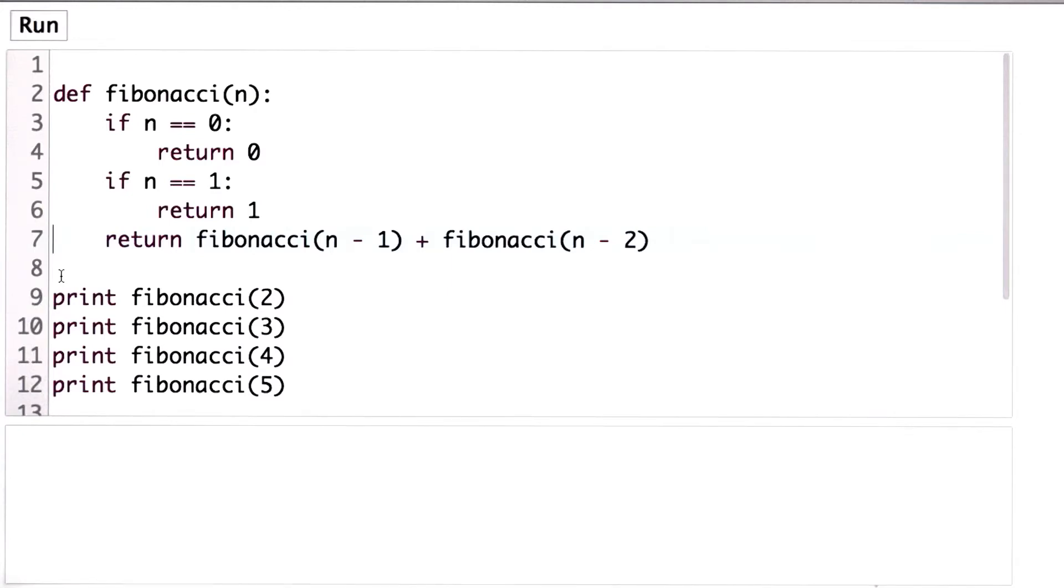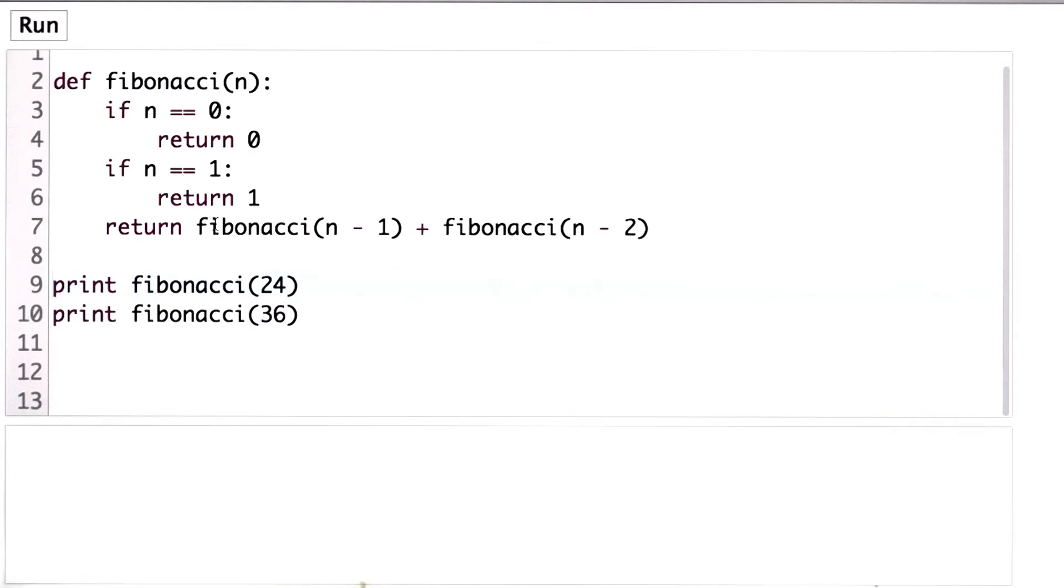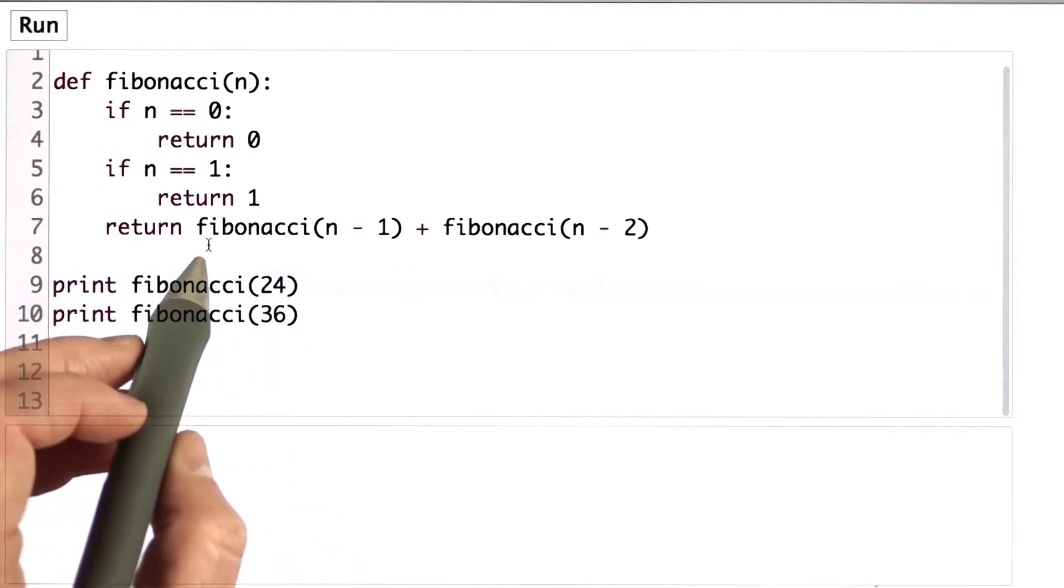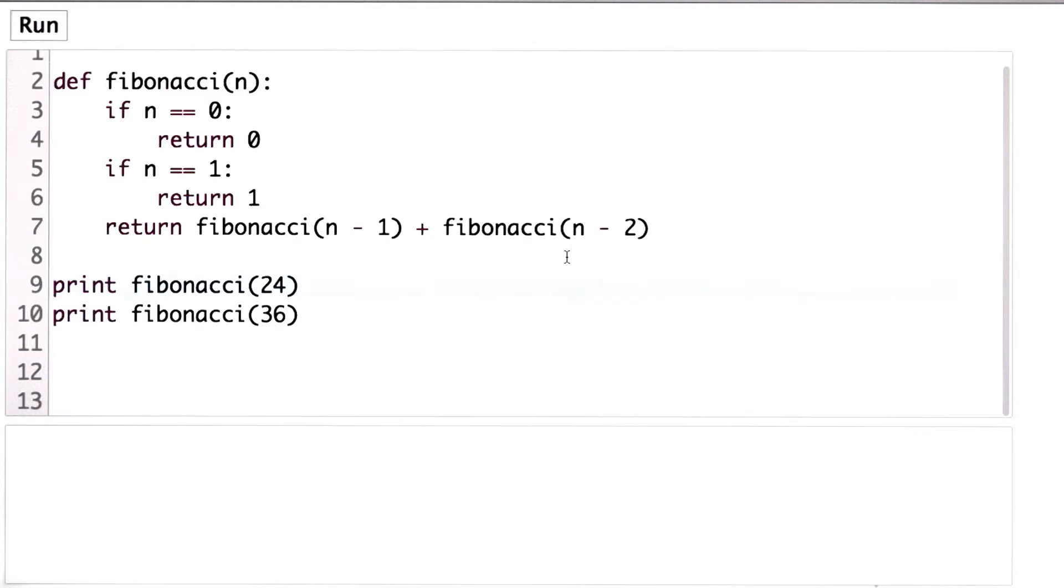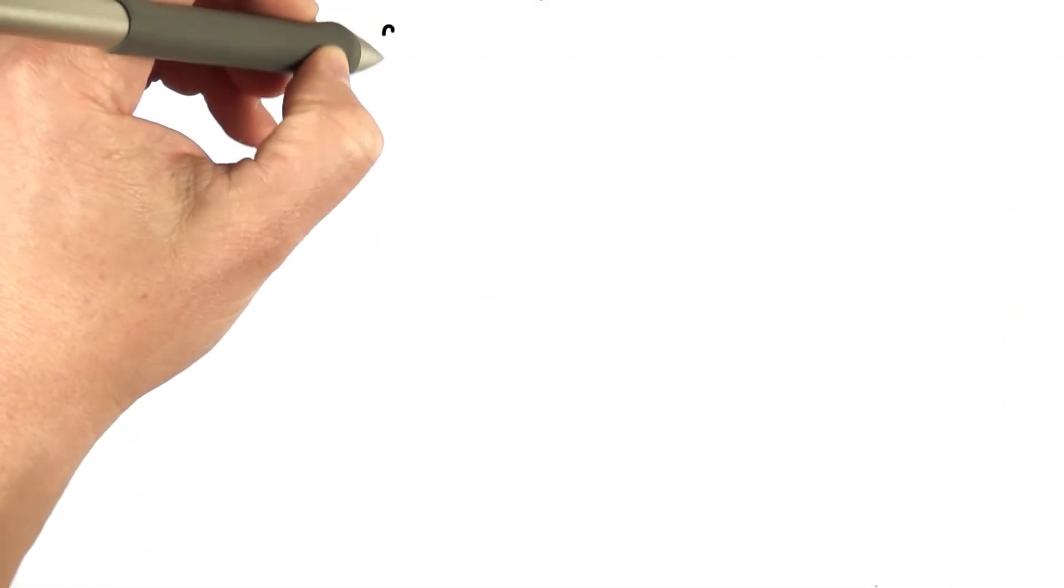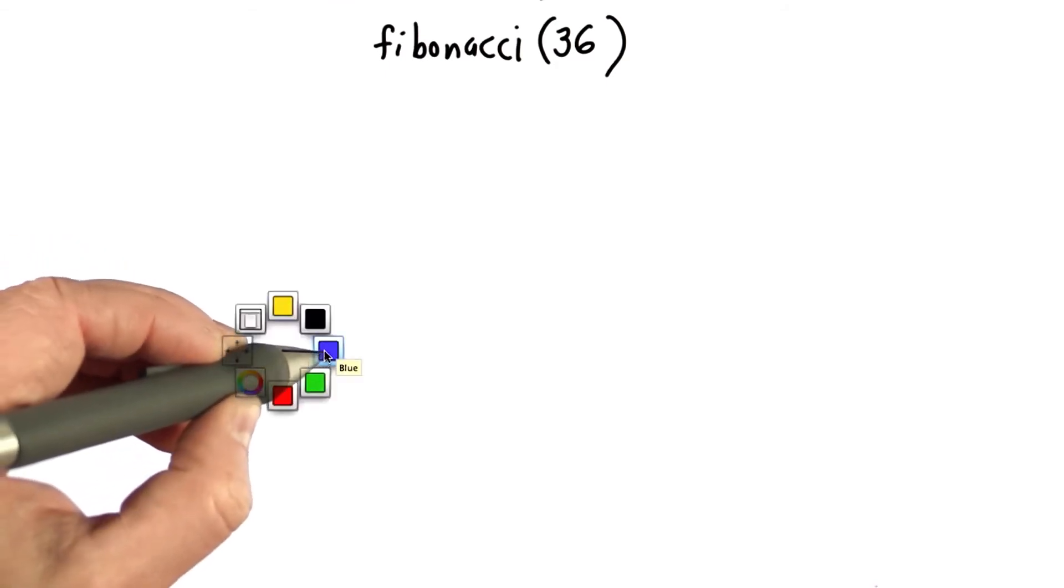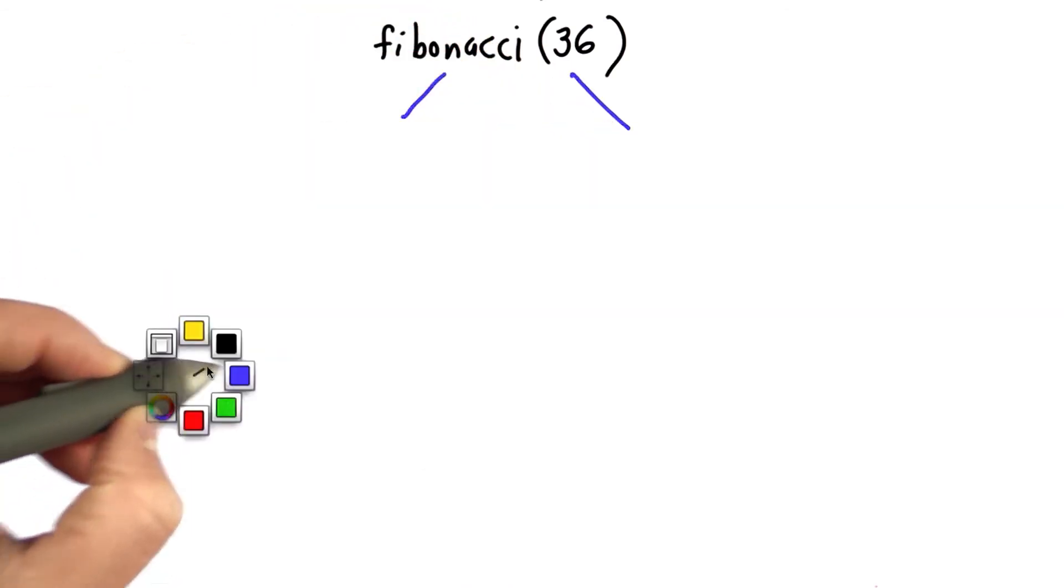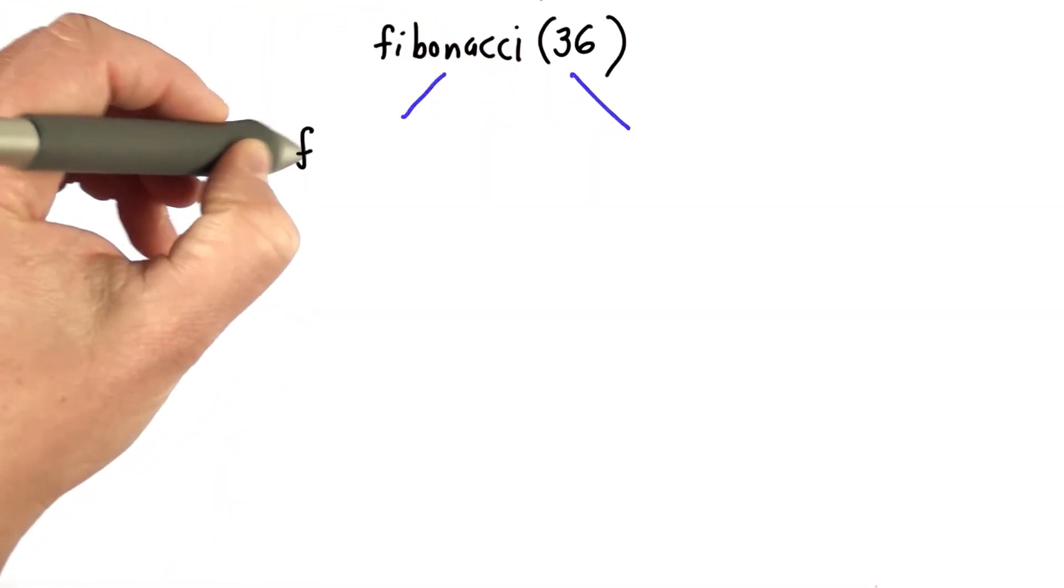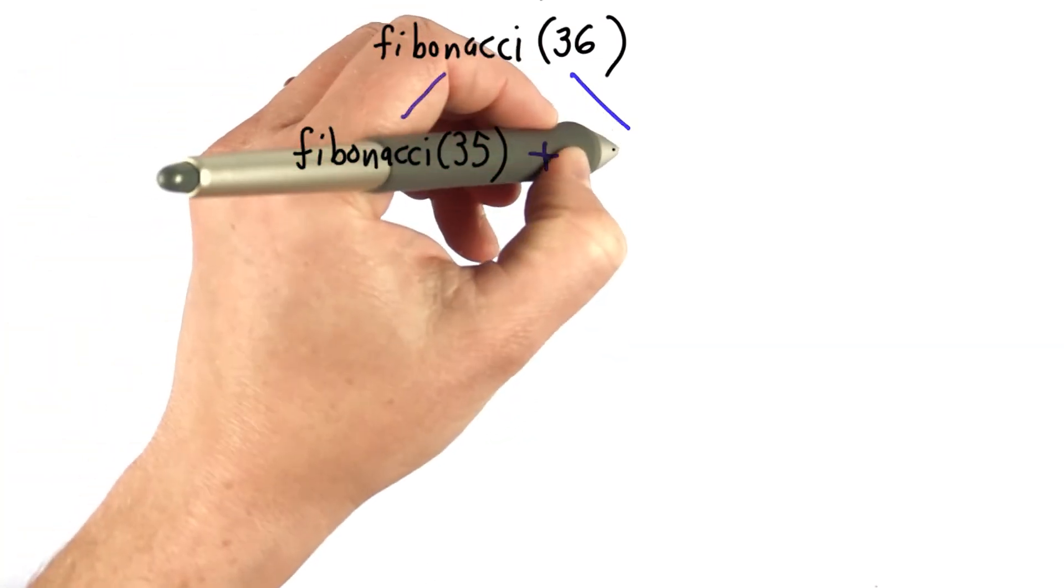So if we look at what our code is doing, every time we call Fibonacci n, what's happening is we're calling Fibonacci n-1, and we're calling Fibonacci n-2. So we're starting, we're calling Fibonacci 36. That was the example where the interpreter didn't finish. And what we'll get is that's going to be broken down into calling Fibonacci 35 plus the result that we get from calling Fibonacci 34.